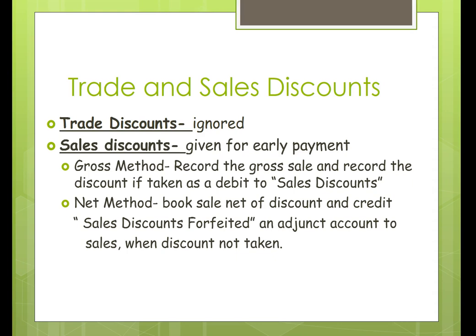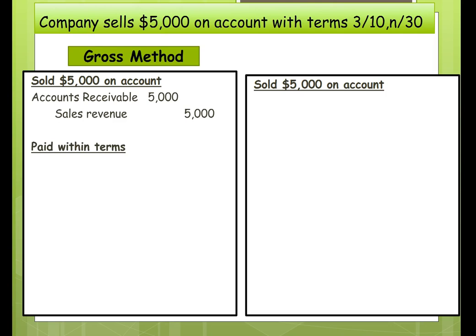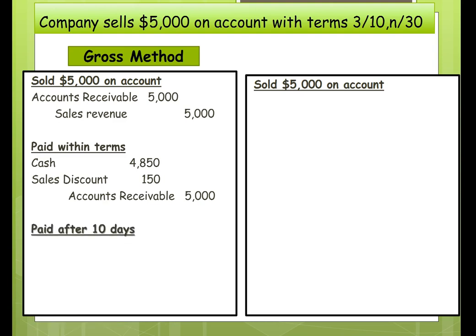Let's look at an example of both methods. Under the gross method, we had a sale of $5,000 with terms of 3% if paid in 10 days, balance due in 30. We record the sale at 100%. If they paid within terms, we record a sales discount reducing sales revenue, and we take the full $5,000 accounts receivable off with cash received being the difference. If they paid after 10 days, it would just be cash and receivables.